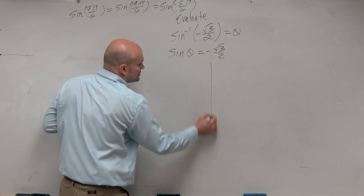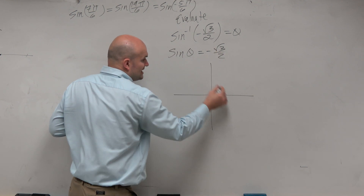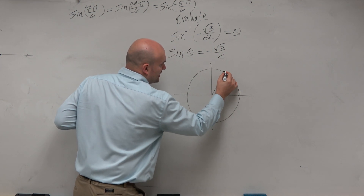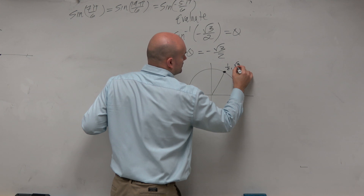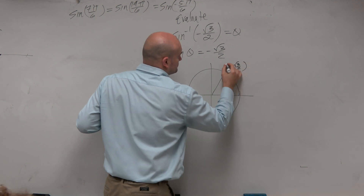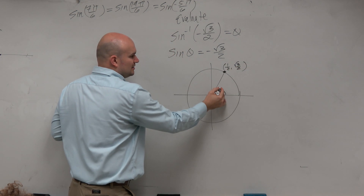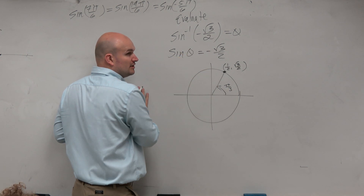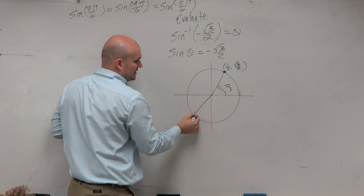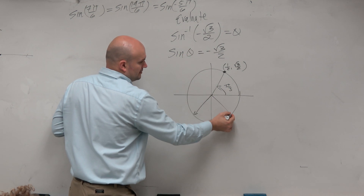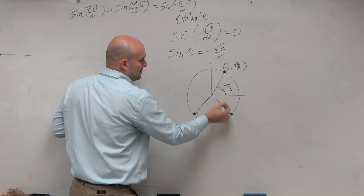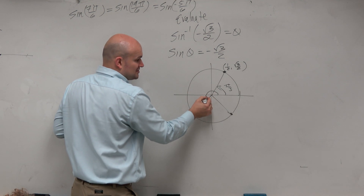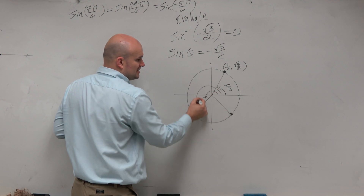By knowing the unit circle, I know that positive square root of 3 over 2 is this angle right here, and that angle is pi over 3. But I'm looking for an angle that's negative, so it's going to be down here. But the restriction of sine — I don't want to pick those two angles, because we just talked about that.